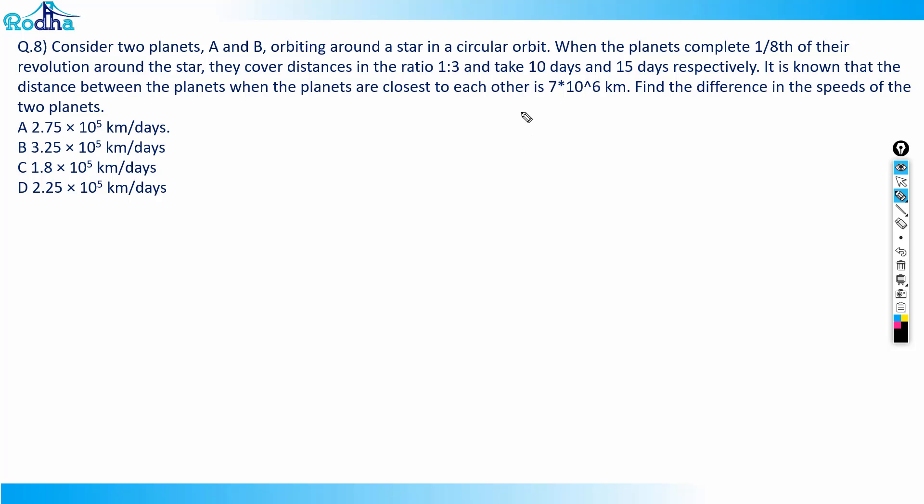Consider two planets A and B orbiting around a star in a circular orbit. When the planets complete one-eighth of their revolution around the star, they cover distances in the ratio 1:3 and take 10 days and 15 days respectively. It is known that the distance between the planets when they are closest to each other is 7×10⁶ kilometers. Find the difference in the speeds of the two planets.